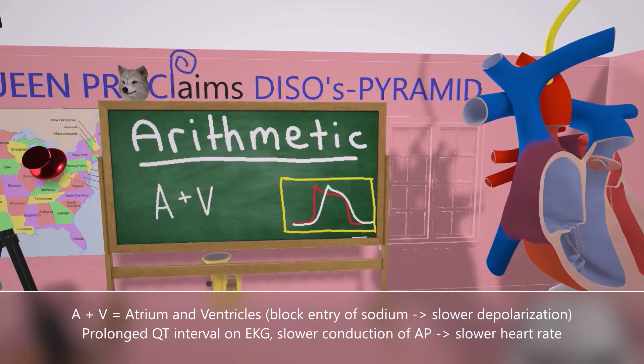Slower depolarization leads to a slower conduction of the action potential, which leads to a slower heart rate.